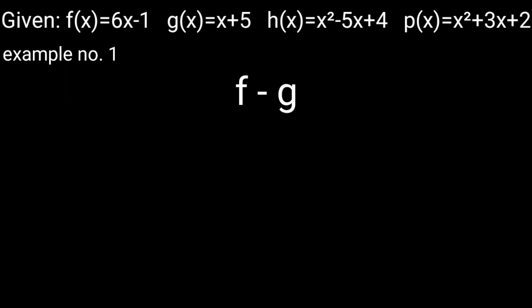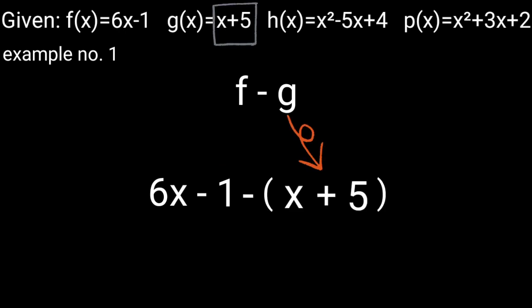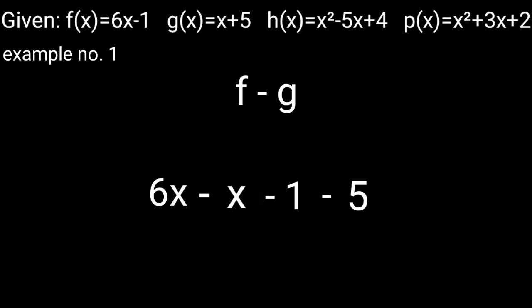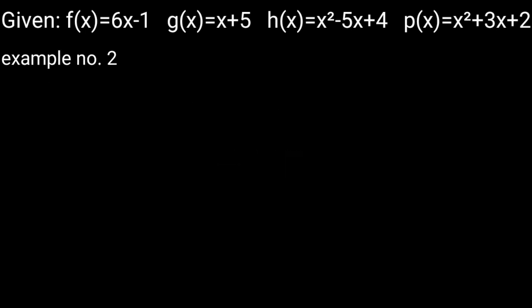Example 1: (f − g)(x) — substitute f with 6x − 1 and g with x + 5. The equation is now 6x − 1 − (x + 5). There is a parenthesis because it's subtraction, so we apply the distributive property: 6x − 1 − x − 5. Combine like terms: 6x − x − 1 − 5. The final answer is 5x − 6.